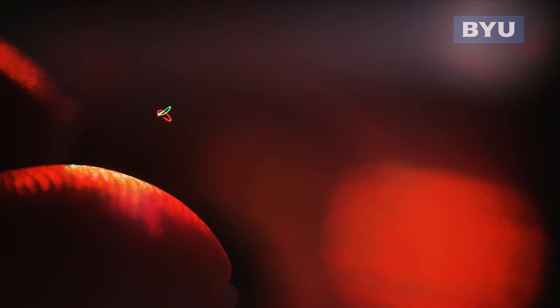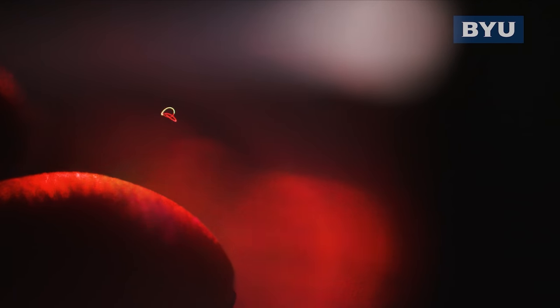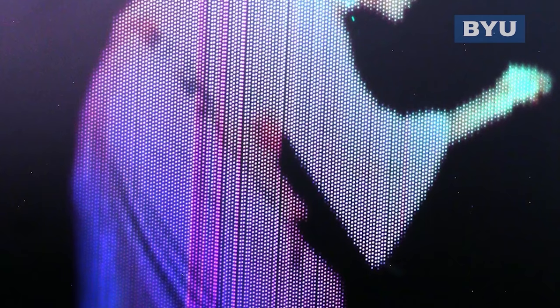If they move that particle around fast enough by changing the focal point of the laser, then they can actually get that particle to fly around and look like it's a continuous image. And they can change the colors on it to have any color they want as well. So they can actually generate an image in 3D space with one single particle moving around really fast through the air. You can use these optical tweezers to make really cool 3D images like this.